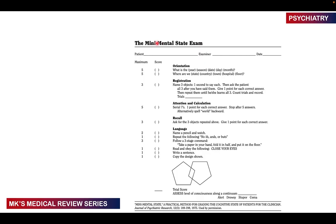Here is the exam sheet. You place the patient's name, the examiner's name, and the date when you did the exam. The maximum score for orientation to time is out of five. You ask the patient: what year do you think this is? If correct, you give them one point. You ask what season it is — one point if correct. You ask what date it is today, what day it is, and what month it is — one point each. So the maximum you can get for orientation to time is five out of five.